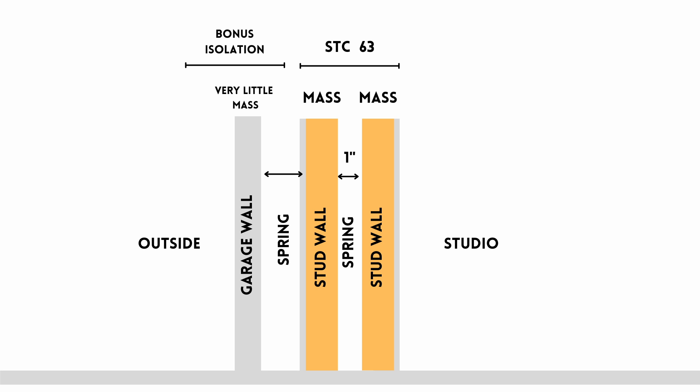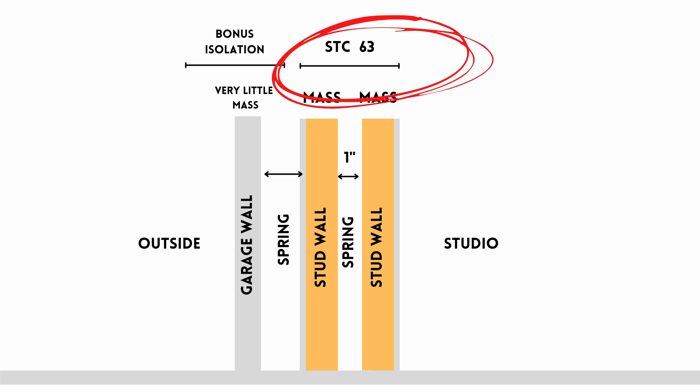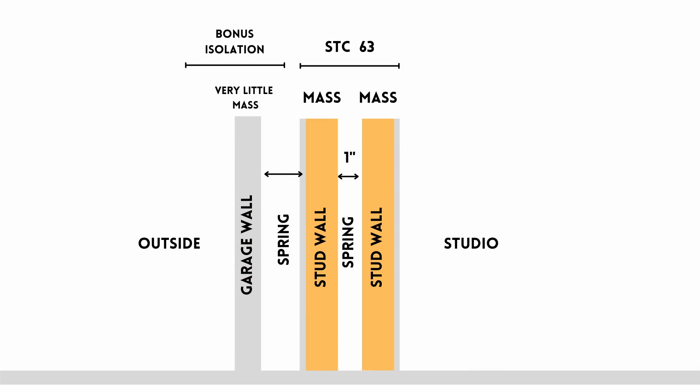But they'd be wrong. Your inside double-wall system is still giving you that STC rating of 63 — that works whether or not the outside garage wall exists. I actually look at the garage wall as a bonus wall: it adds another mass-spring-mass layer to the system, which only increases isolation. Now, if I took drywall and placed it between the two layers of my double-wall system, yes — that would be a true triple leaf effect and would decrease isolation.